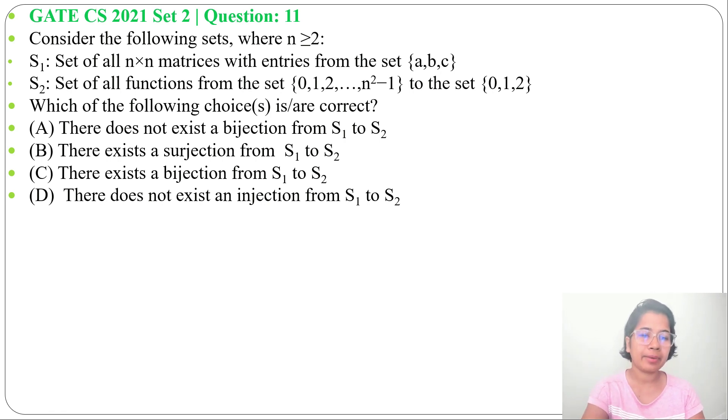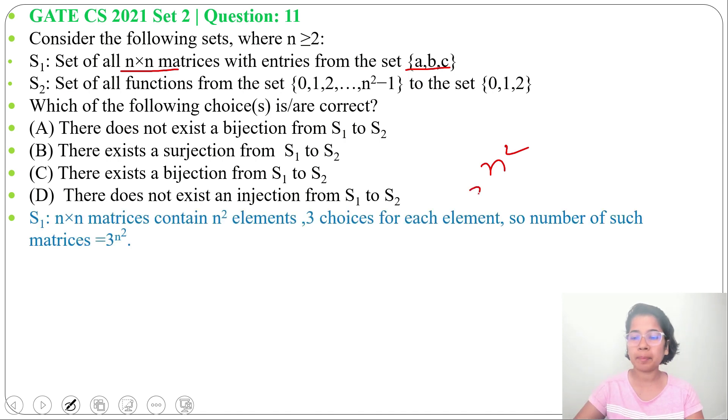In statement 1, it's given n×n matrices. n×n matrices contain n² elements, and for each element there are 3 choices. It can be either A, B, or C. So there can be 3 power n² matrices possible.